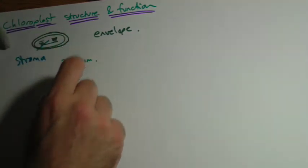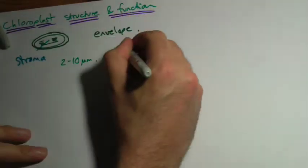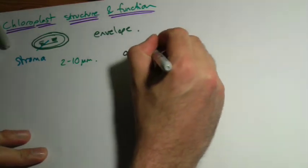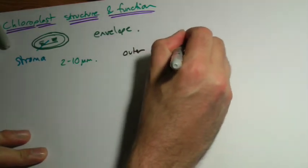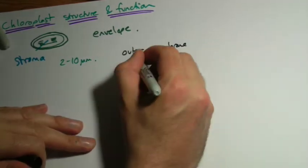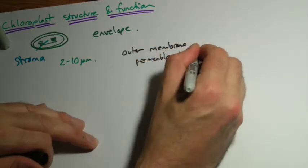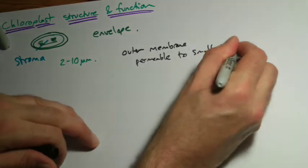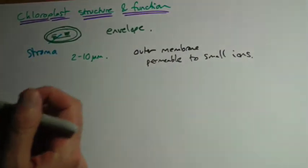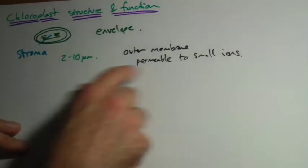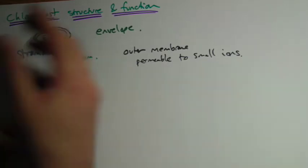This envelope, the outer membrane, is pretty much permeable to small ions. So things like any small charged particles, we're not talking about huge things going in and out here, but small ions are free to move through, things like hydrogen for example.